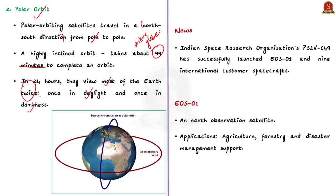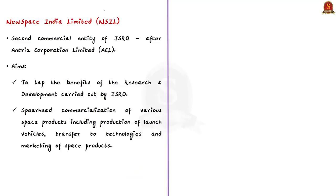Now let us discuss today's news article. ISRO's workhorse PSLV has successfully launched EOS-01 and nine other international satellites. They were launched from Sriharikota, which is in Andhra Pradesh. EOS-01 is an Earth observation satellite used for observing Earth and its phenomena like agriculture, forestry, and disaster management support. The nine other customer satellites are from Lithuania, Luxembourg, and USA, launched under a commercial agreement with New Space India Limited.